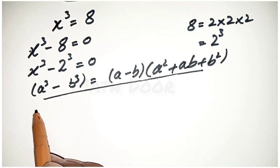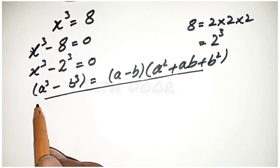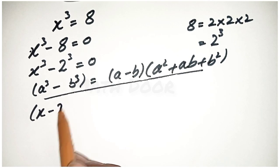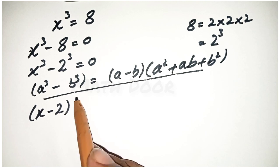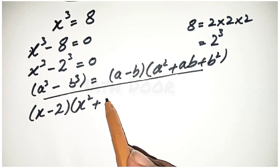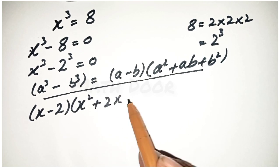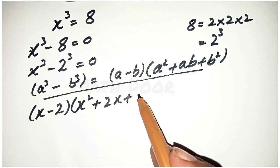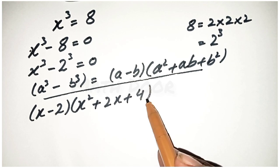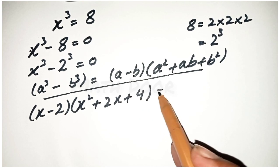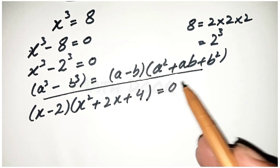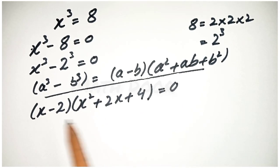We apply this formula. According to this formula, we can write the above equation as x minus 2, bracket x square plus 2x plus 2 square, which equals 0.